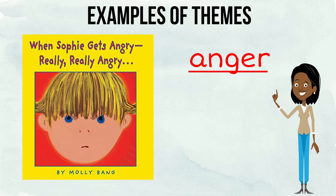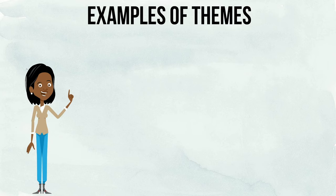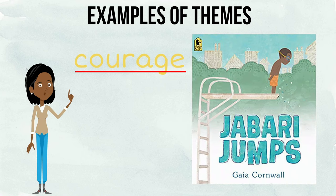In the story Jabari Jumps by Gaya Cornwall, the theme is courage as the main character overcomes his fear to jump off the diving board at a pool.